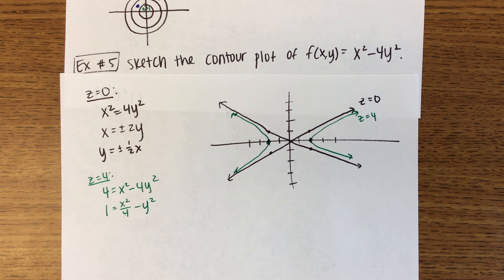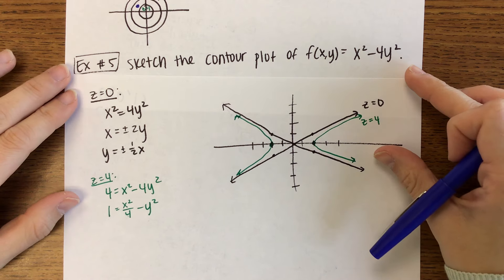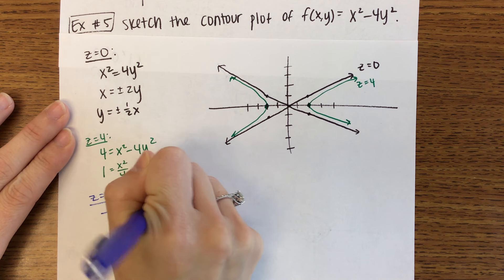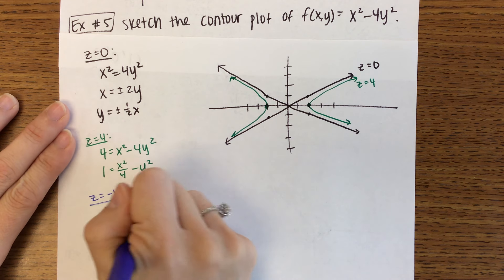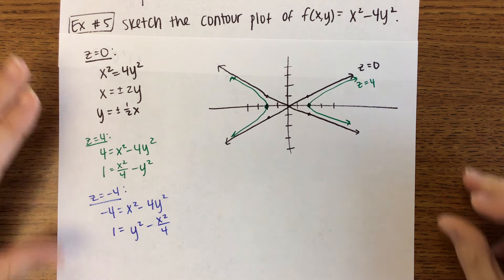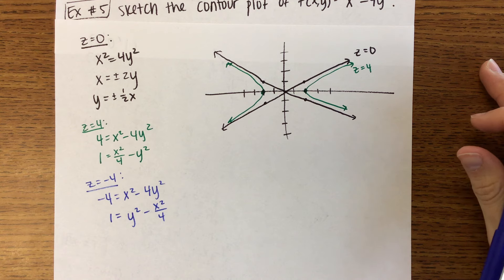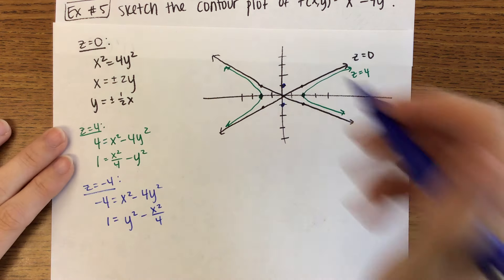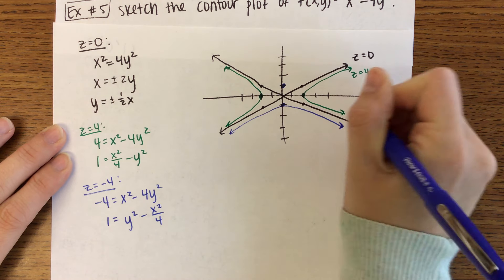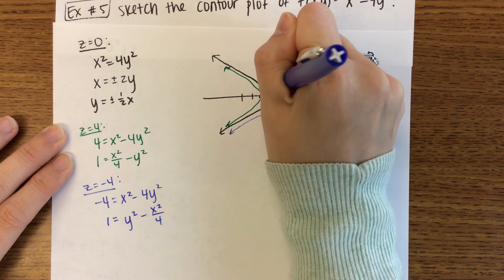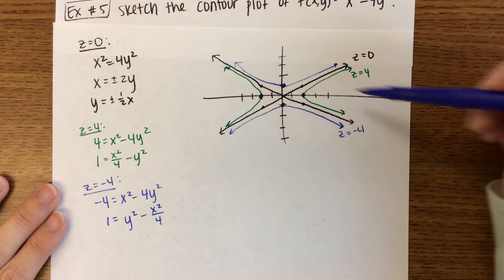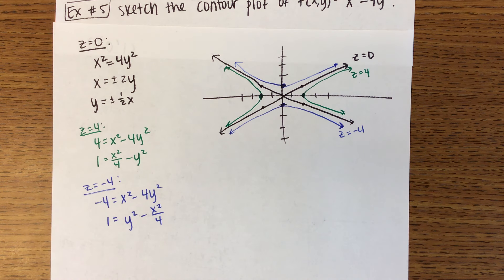If we chose z equals 4, another good one to choose is z equals negative 4. Dividing by negative 4 makes y squared positive: 1 equals y squared minus x squared over 4. That's also a hyperbola, but this one opens up and down. If x equals 0, y equals plus or minus 1 — those are the vertices. At this point you should get the picture: the contour plot has hyperbolas opening left-right and up-down.